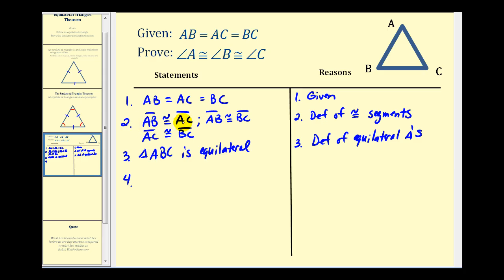So if side AB is congruent to side AC, notice angle C is opposite side AB and angle B is opposite side AC. We know that angle C must be congruent to angle B.